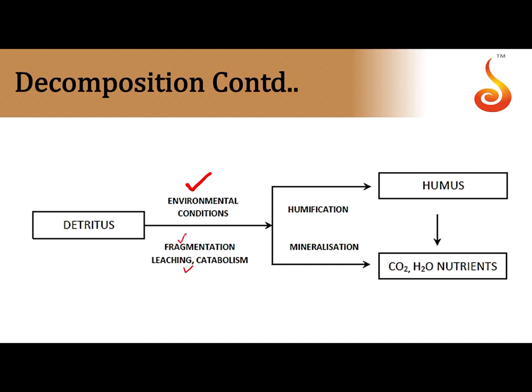Water-soluble minerals in detritus are washed into deeper soil layers by leaching, making them unavailable to plants. Decomposers break down complex organic substances into simpler inorganic substances through catabolism. This produces a brown amorphous colloidal substance rich in inorganic nutrients called humus. As humus slowly degrades, it releases carbon dioxide, water, and nutrients through mineralization. Earthworms handle fragmentation; microbes carry out leaching, catabolism, humification, and mineralization.